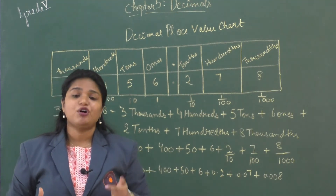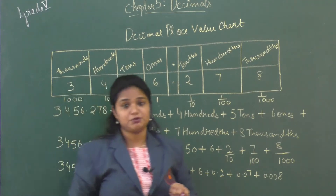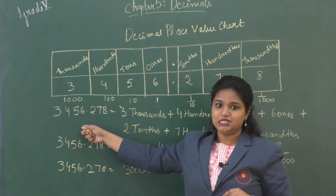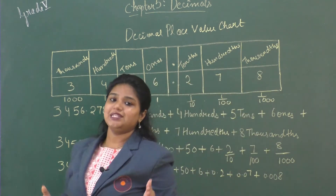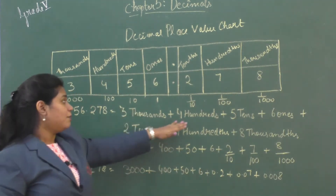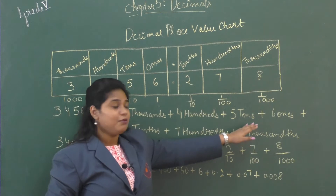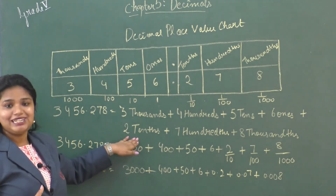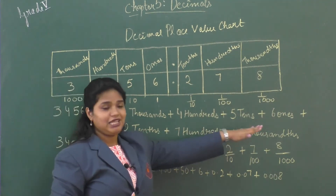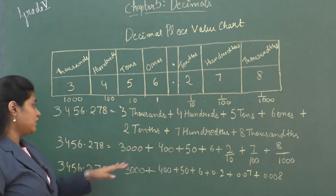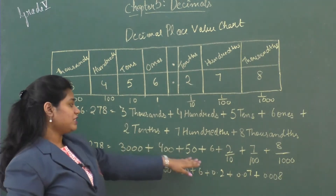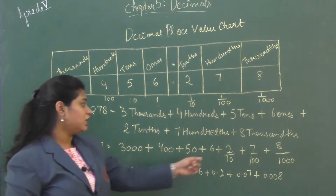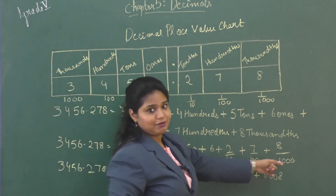Now let's talk about the expanded form of a decimal number. There are three ways to write the expanded form. The number is 3456.278. The first way: expand as three thousands plus four hundreds plus five tens plus six ones plus two tenths plus seven hundredths plus eight thousandths. The second form: three thousand plus four hundred plus fifty plus six plus 2/10 plus 7/100 plus 8/1000, writing the fraction form of the decimal part.